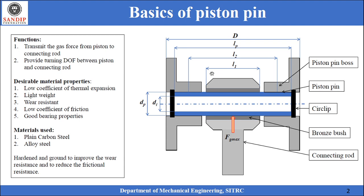L1 is the length of the piston pin inside the small end of the connecting rod. It is assumed that the piston pin is supported by the piston boss, and the midpoint of the length of the piston pin inside the boss is considered as the point where the support reactions act. Thus the piston pin can be considered as a beam on simple supports, with the distance between the two support reactions taken as L2.